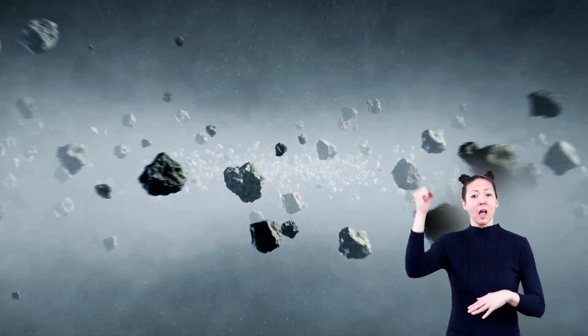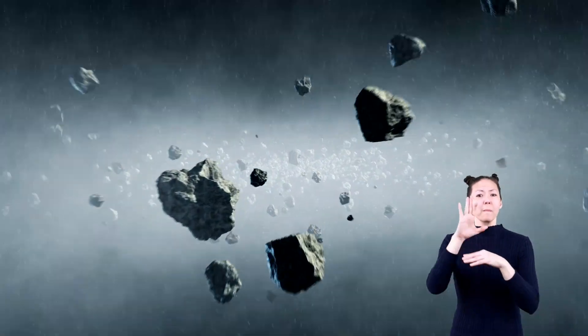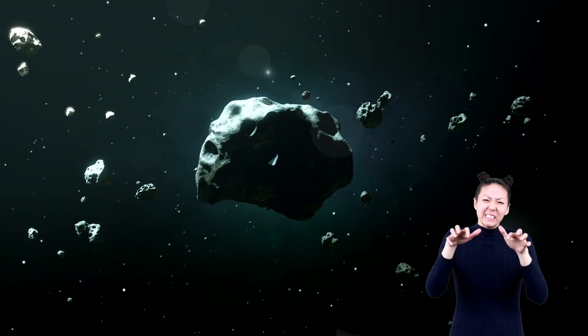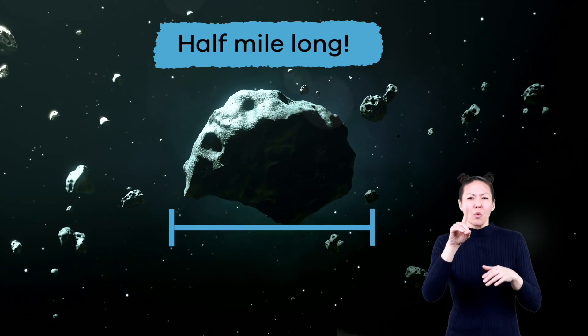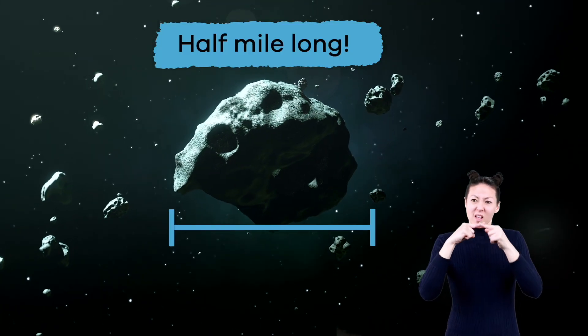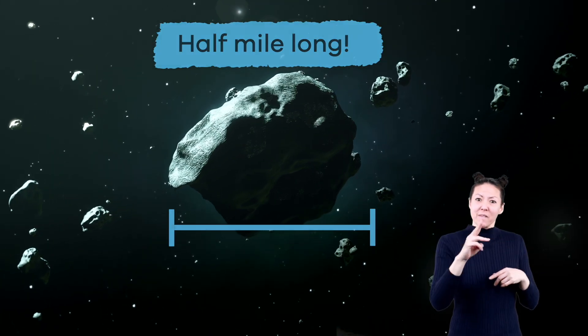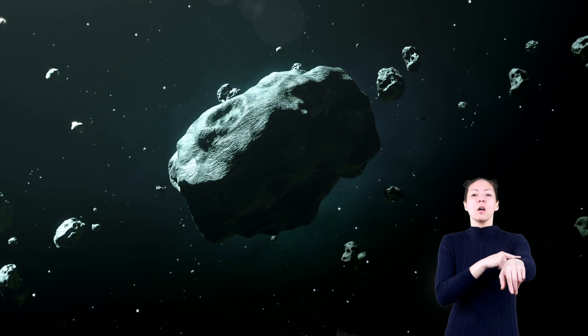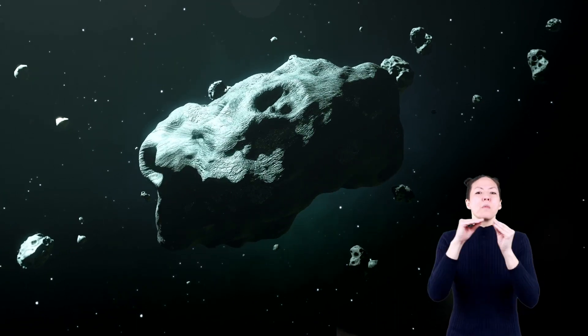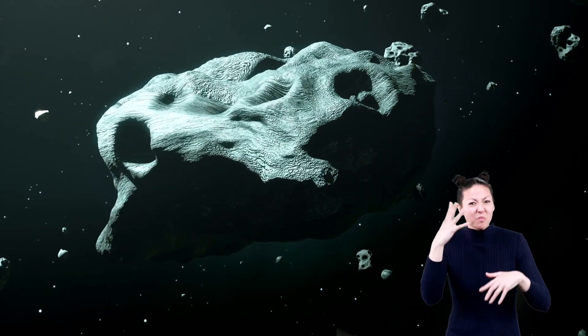The asteroid belt contains around a million asteroids that are over a half a mile long. And there are millions more that are smaller than that. Pretty cool, huh?